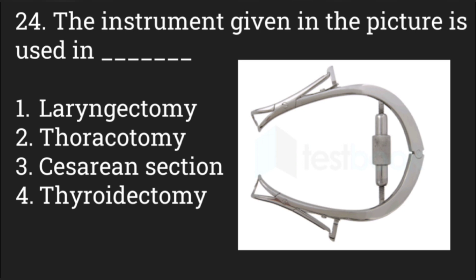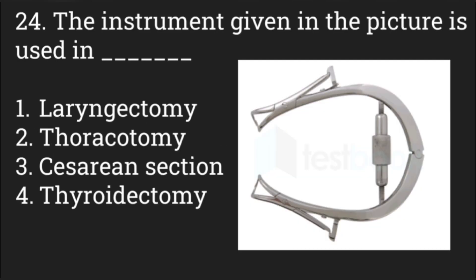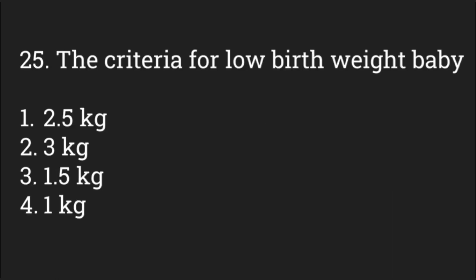The instrument shown in the picture is used in — options: laryngectomy, thoracotomy, caesarean section, or thyroidectomy. The answer is thyroidectomy. This is Joll's self-retaining retractor.